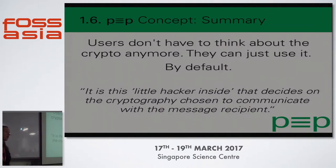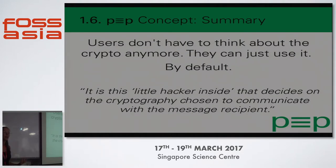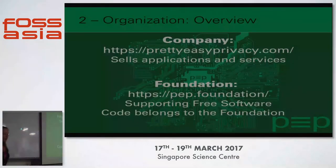To summarize the concept: users don't have to think about crypto anymore — they can just use it by default. A journalist wrote once about 'the little hacker inside that decides on the cryptography.' This is what we do every day — opening a chat in IRC, realizing you can't do OTR there, moving to Jabber, then to Signal. We make these decisions consciously because we're techies, but we cannot expect this from everyone. We want software to make these decisions automatically.